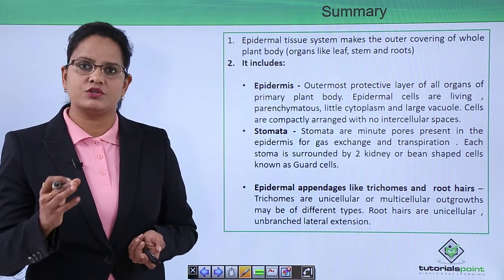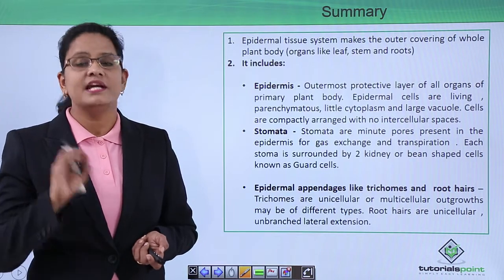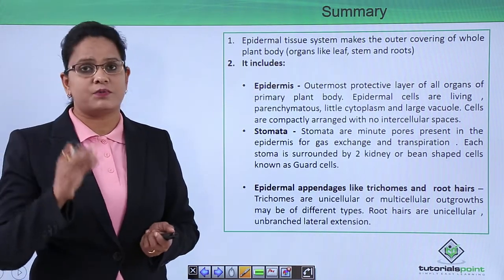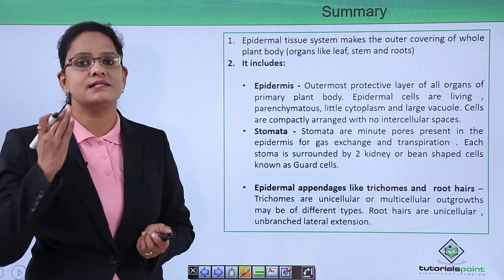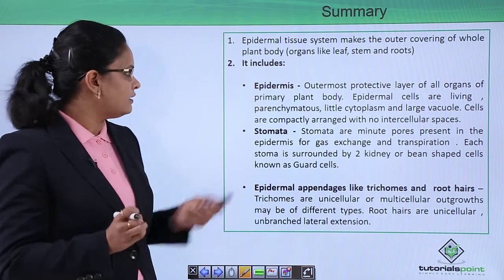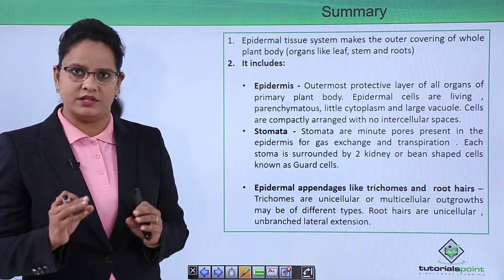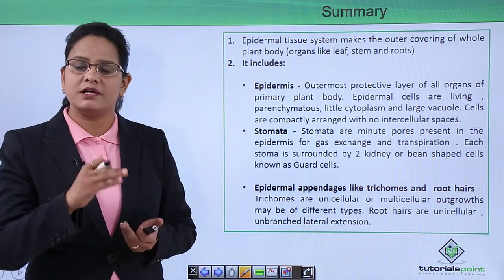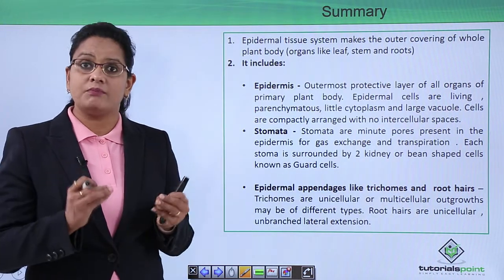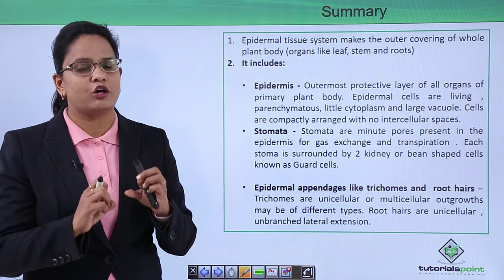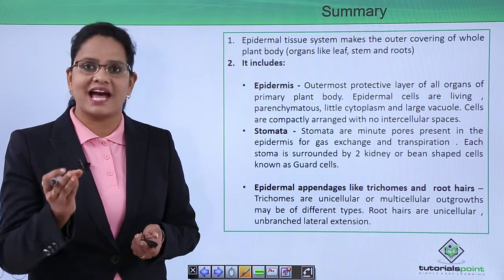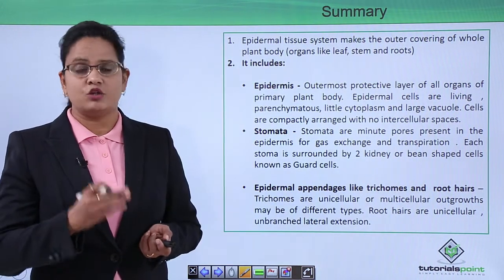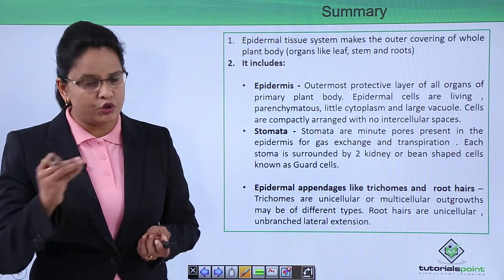To summarize: the epidermal tissue system is the outer protective covering of the whole plant body with three components. The epidermis is the outermost protective layer — thin-walled, made up of living parenchymatous cells with a nucleus, large vacuole, and very little cytoplasm; cells are compactly arranged with no intercellular space. The stomata are minute pores on the epidermis, present on upper or lower epidermis depending on whether the leaf is dicot or monocot, made up of two guard cells — kidney-shaped in dicots and dumbbell-shaped in monocots — with functions of gas exchange and transpiration.